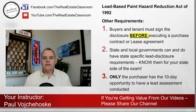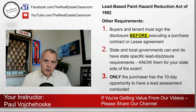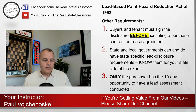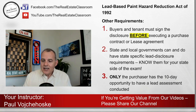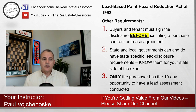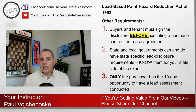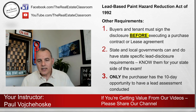There are other requirements under the law. Number one — very important: buyers and tenants must sign the lead-based paint disclosure before they sign the purchase contract or lease agreement. Under the Code of Federal Regulations, if a buyer signs a purchase contract or a tenant signs a lease contract prior to executing the lead-based paint disclosure, it makes the purchase agreement and the lease agreement voidable. Number two: state and local governments can have — and have enacted — state-specific lead programs. If you live in a state with its own lead-based paint law, people must comply with both the federal requirements discussed here and their state's specific requirements.